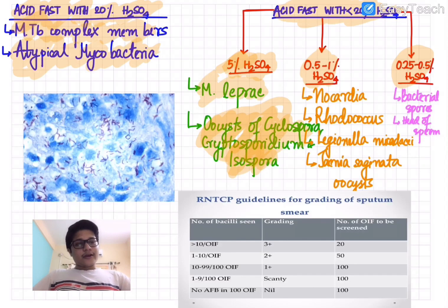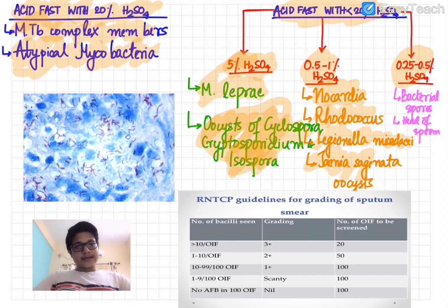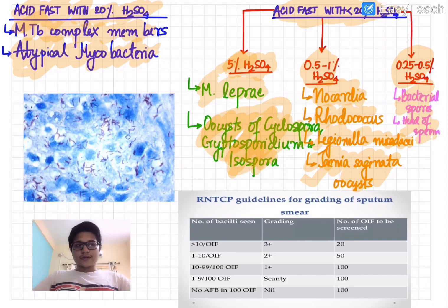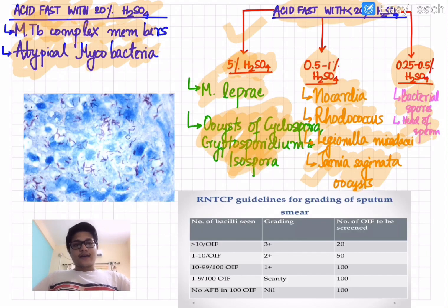At 0.5–1% H₂SO₄, the acid fast organisms are Nocardia, Rhodococcus, Legionella micdadei, and Taenia saginata ova. Taenia saginata ova being acid fast at this concentration is a favorite viva question. Finally, acid fast with 0.25–0.5% sulfuric acid are bacterial spores and the head of sperm. This modification of Ziehl-Neelsen staining is definitely going to be asked during your viva.